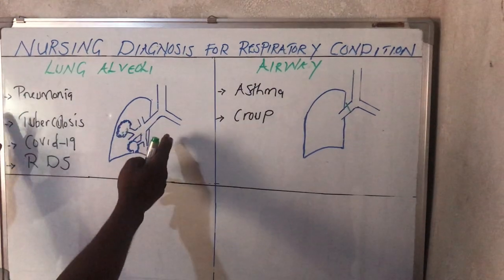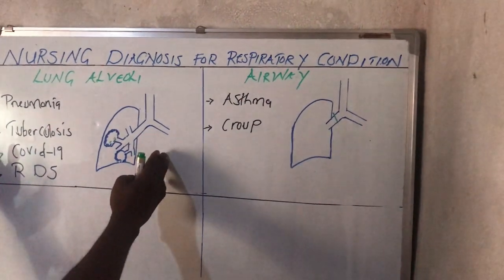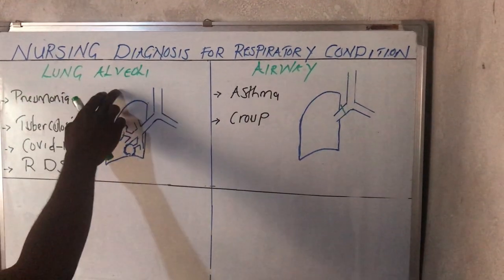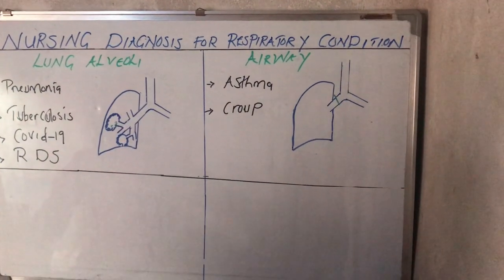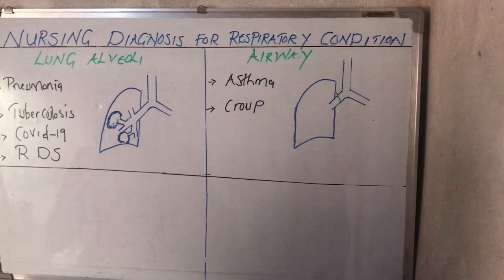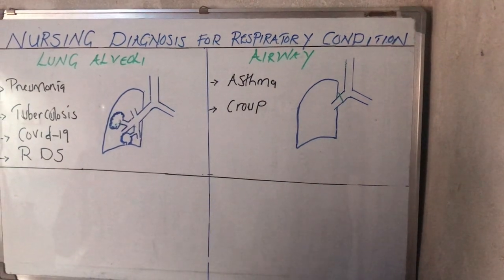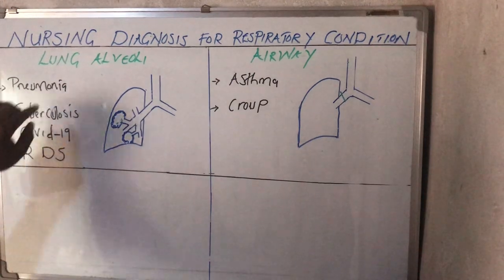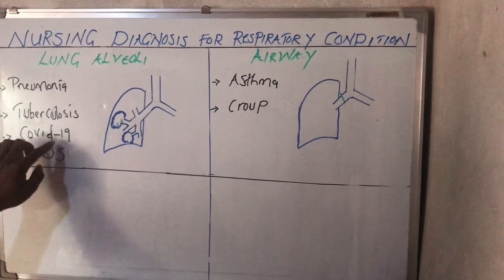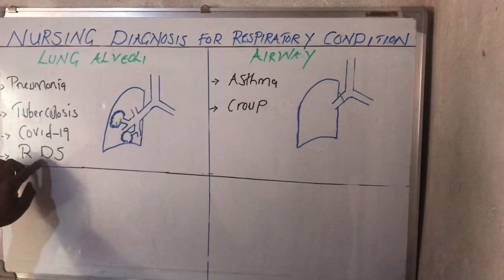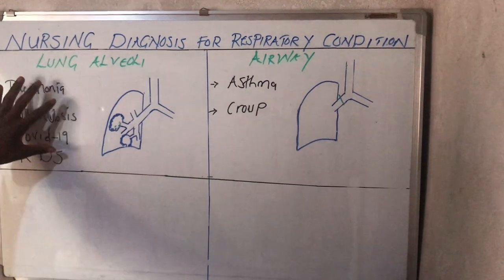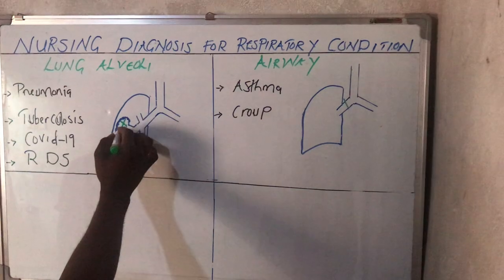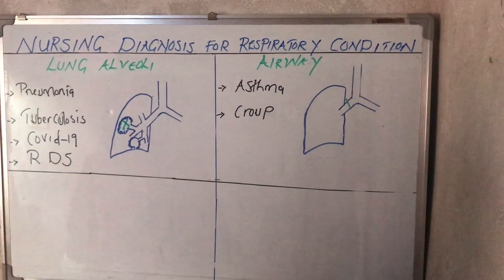Looking at this side of the board, we have the lung alveoli. We're going to discuss the nursing diagnosis for all conditions that affect the lung alveoli — that is pneumonia, tuberculosis, COVID-19, and respiratory distress syndrome. All four of these major conditions actually happen inside the lung alveoli.